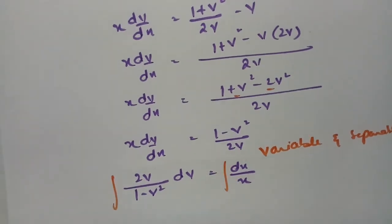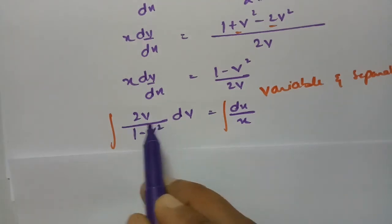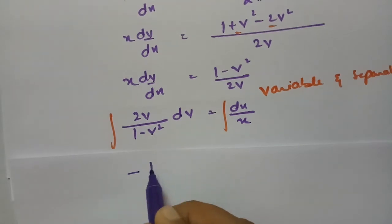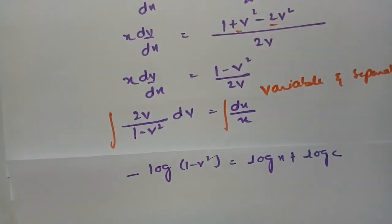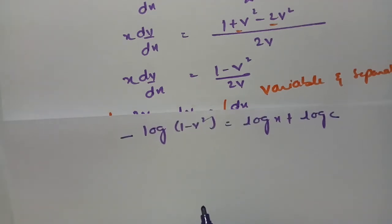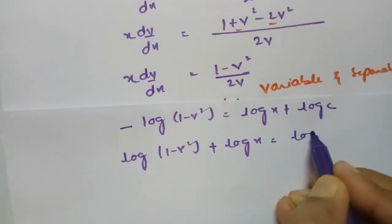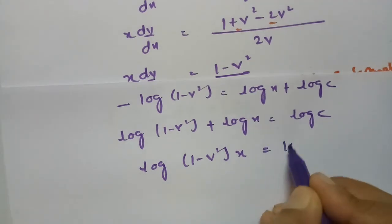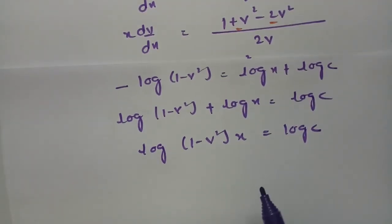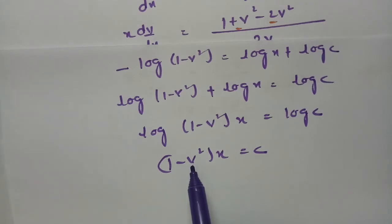Separating variables: 2v/(1 − v²) dv = dx/x. Integrating both sides, note that the derivative of (1 − v²) is −2v, so the left side integrates to −log(1 − v²). The right side gives log x + log c. Rearranging: log(1 − v²) + log x = log c, and since log a + log b = log(ab), we get (1 − v²)·x = c.